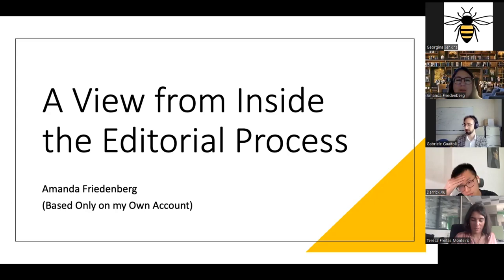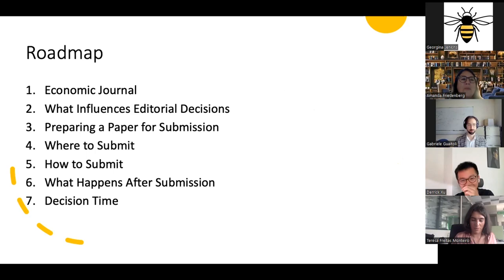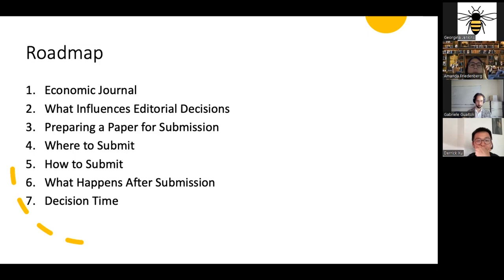Gabrielle has told you a little bit about where I'm coming from, so I'll skip over that. Here's the roadmap: first, I'll tell you about the Economic Journal; then what influences editorial decisions at a big picture level; then preparing a paper for submission; then how to think about where and how to submit; and finally what happens after you submit and once you hear back with a decision.